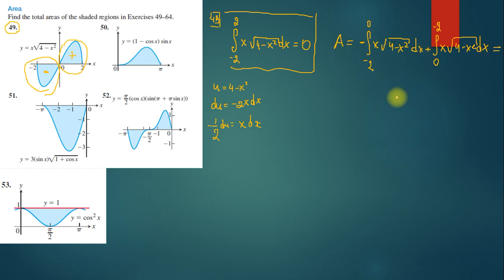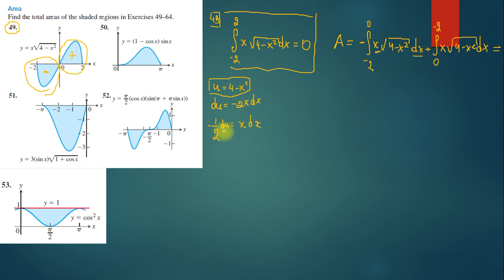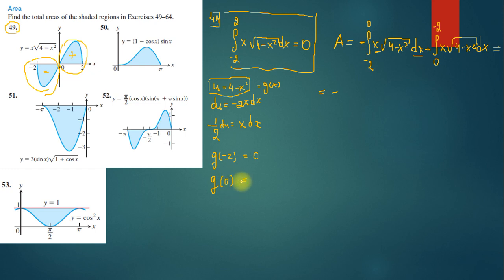I use the substitution method: let u = 4 - x², so du = -2x dx, which means x dx = -1/2 du. Now I change the limits. For the first integral, g(-2) = 4 - 4 = 0 and g(0) = 4. For the second integral, for x = 2, g(2) = 0.